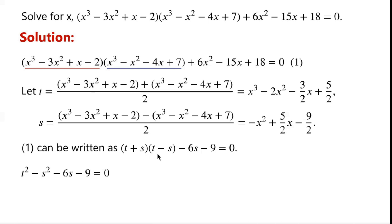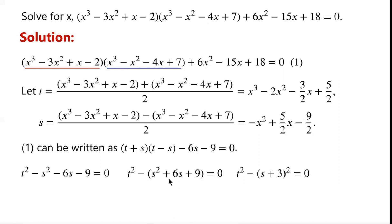(t + s)(t - s) can be written as t² - s². So the left-hand side of the equation becomes t² - s² + 6s + 9. The expression s² + 6s + 9 can be written as a perfect square, giving t² - (s + 3)² = 0, so t = ±(s + 3).